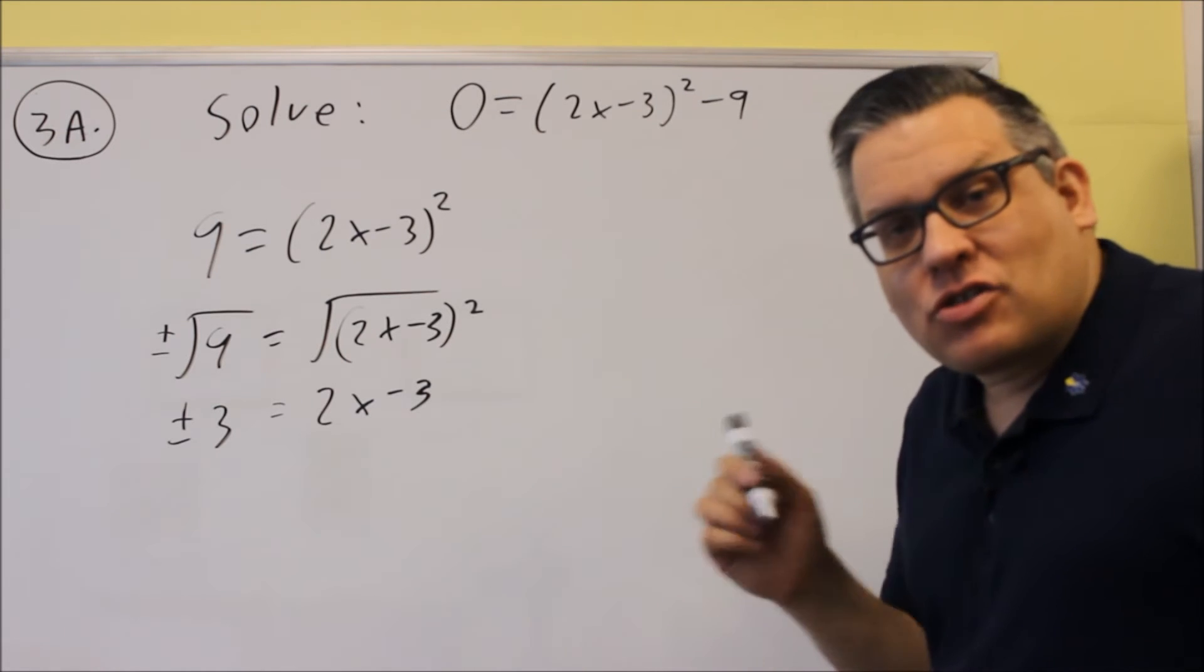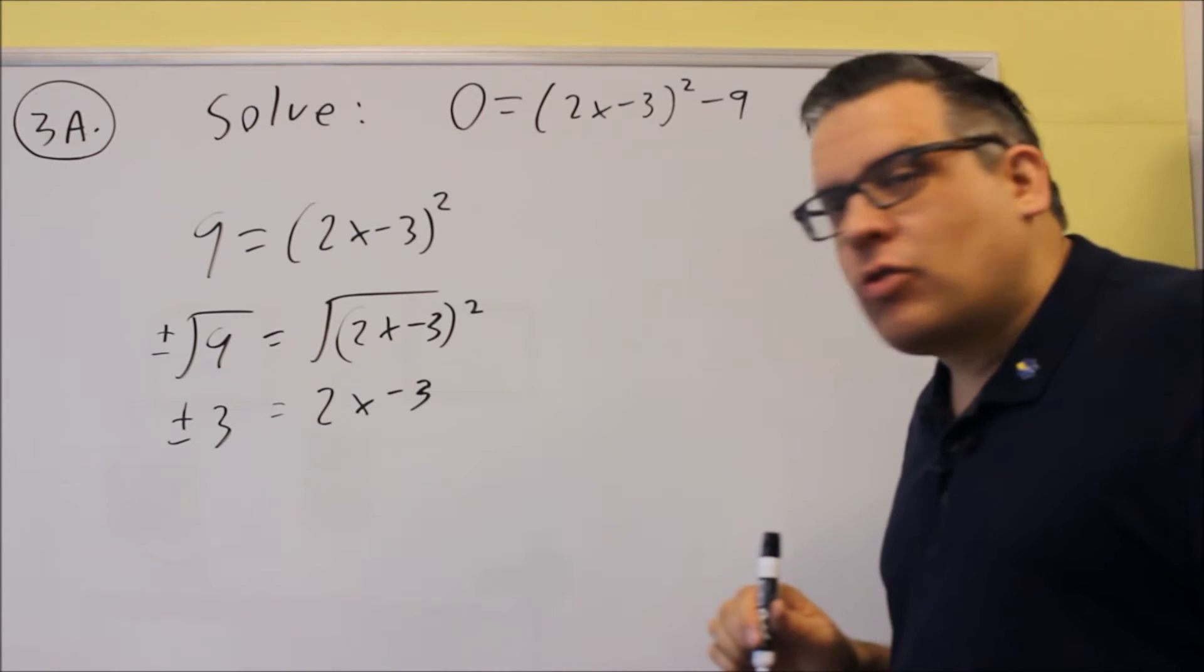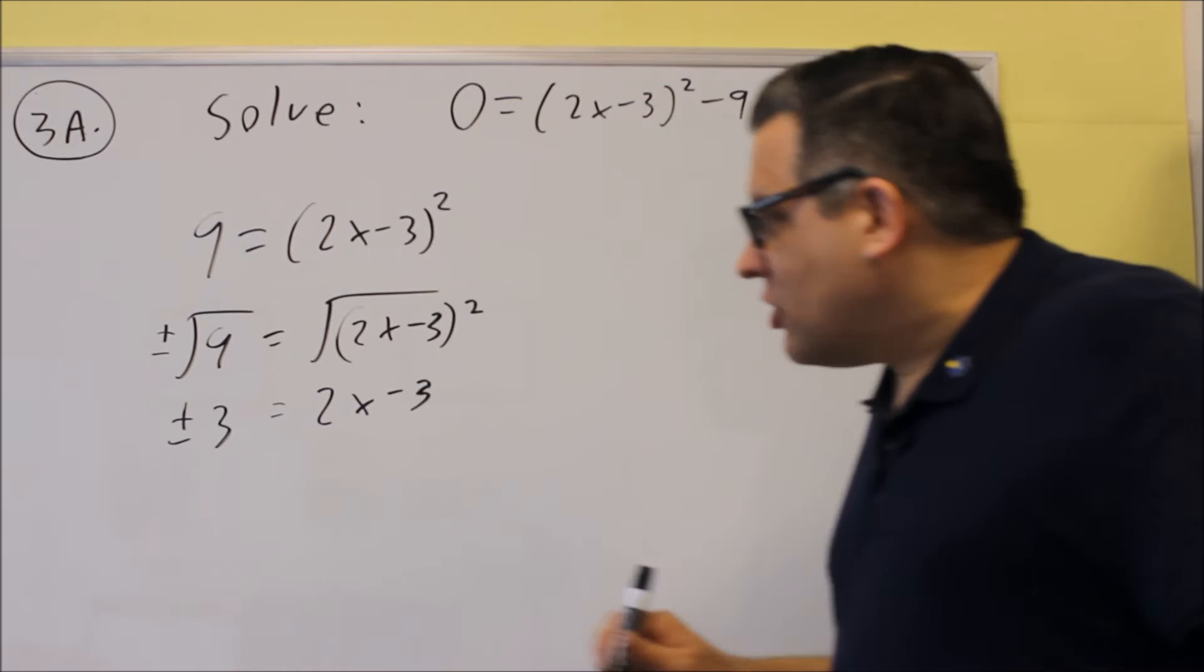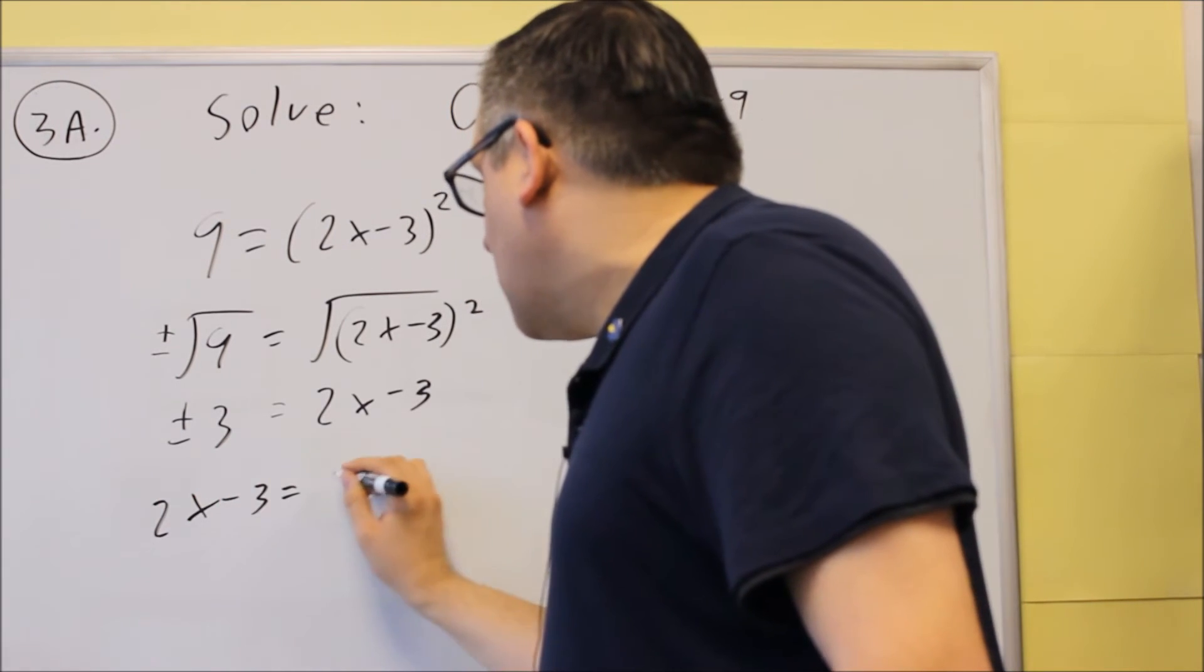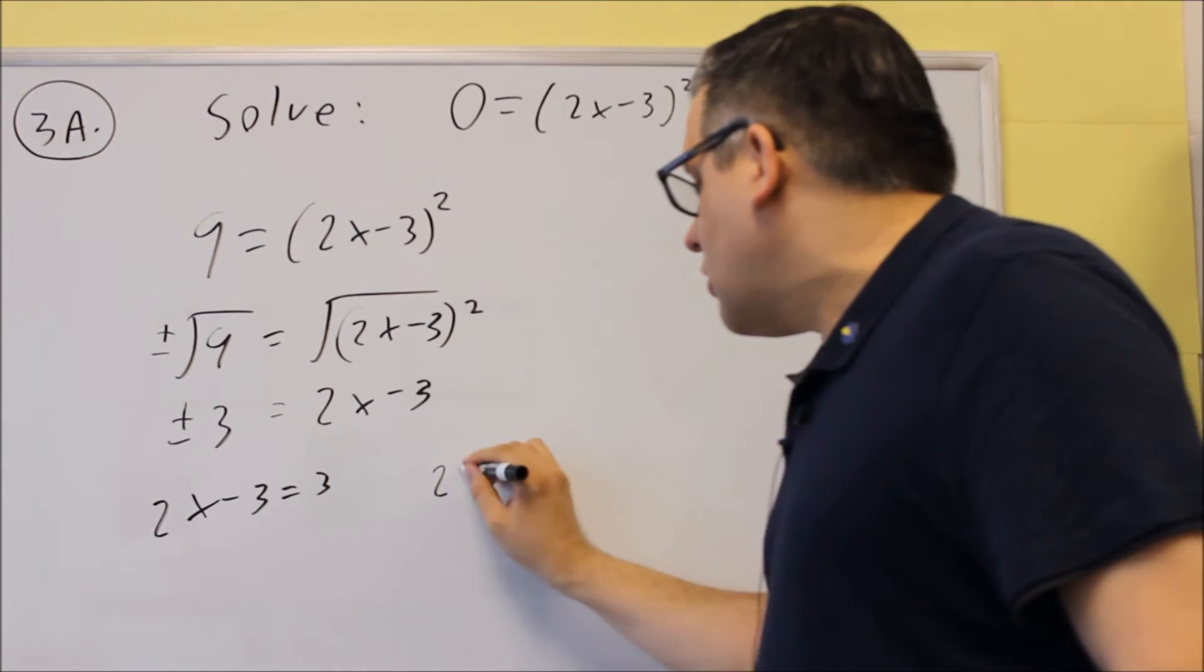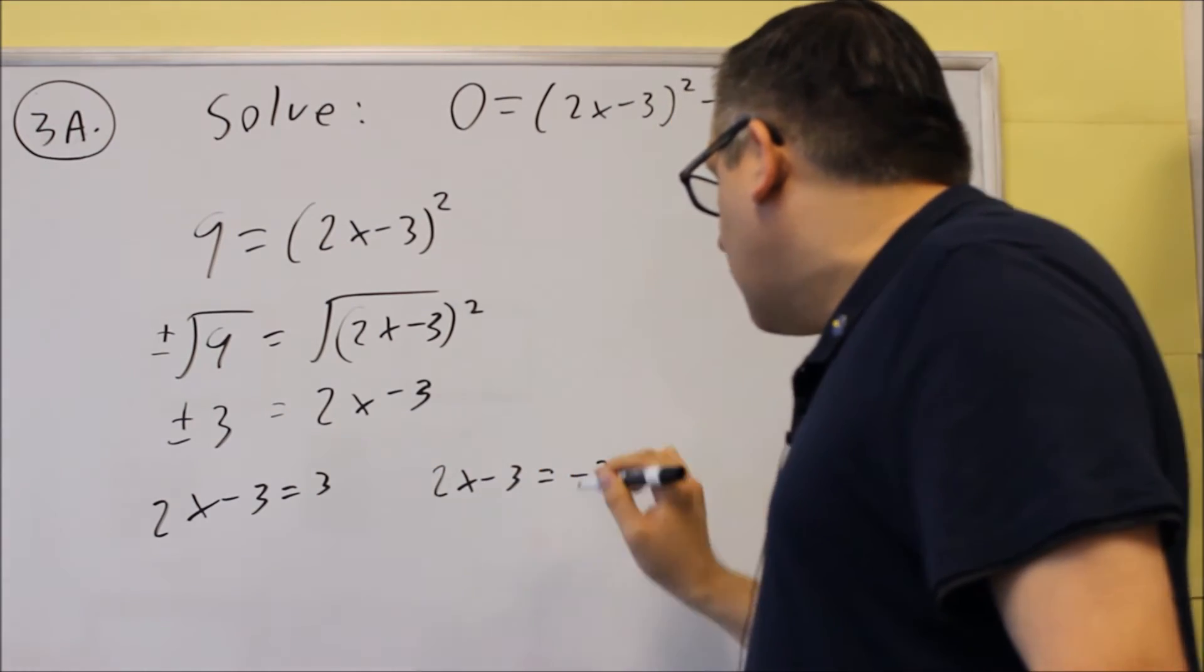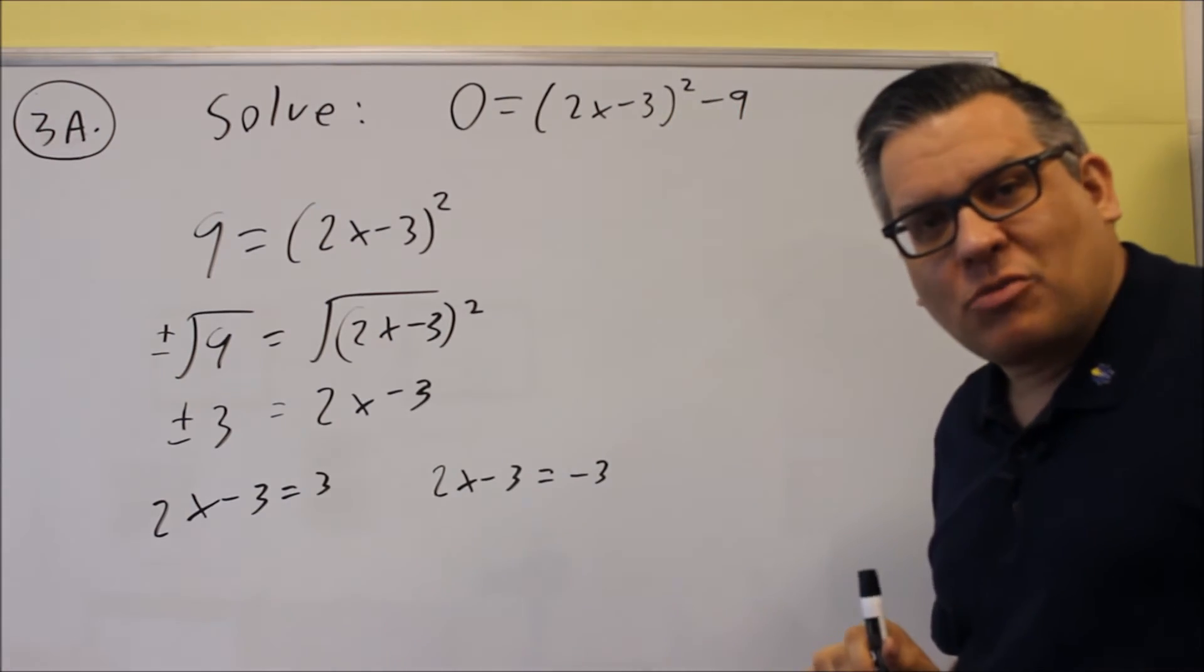What you would do is take 2x - 3 equals positive 3, and 2x - 3 equals negative 3, because there are two numbers there, plus or minus 3. We're going to now solve both of those for x.